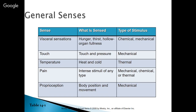Touch through touch and pressure is a mechanical stimulus. Temperature — heat and cold — is a thermal stimulus. Pain is an intense stimulus of any of the types, and that can be chemical, mechanical, or thermal. Proprioception is body position and movement, and that is a mechanical stimulus.